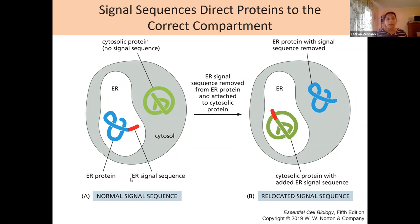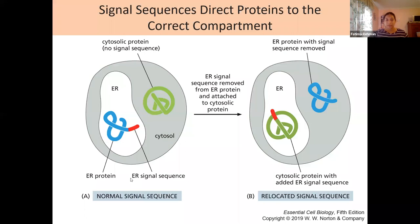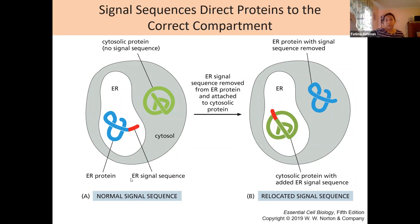You will have an ER signal sequence or secretion signal to indicate the protein is going outside the cell to be secreted, or a nuclear signal to get into the nucleus itself. Those signals are going to be removed once they are read and the protein is going to its final destination.